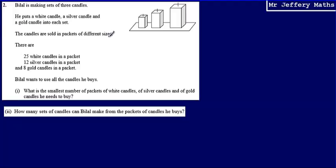The candles are sold in packets of different sizes. There are 25 white candles in a packet, 12 silver, and 8 gold. Bilal wants to use all the candles that he buys, and we're asked what is the smallest number of packets of white candles, of silver candles, and of gold candles he needs to buy.